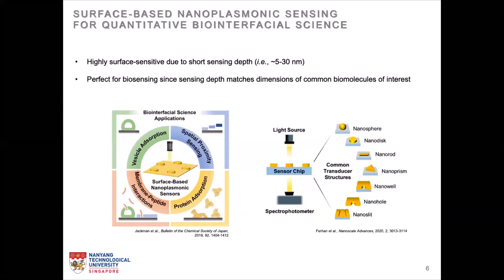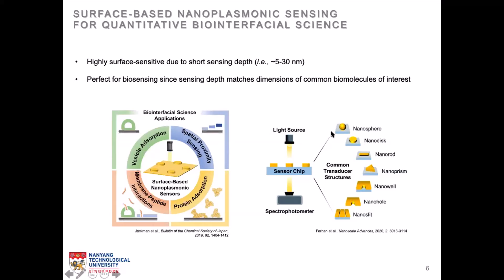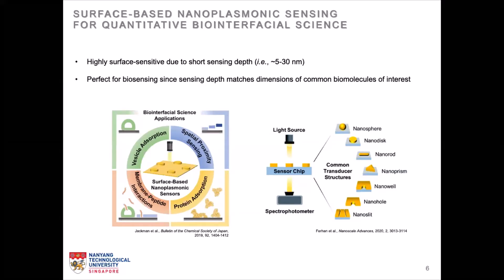Lastly, we can use nanoplasmonics to understand molecular membrane interactions. For example, we've been actively using it to study how peptides interact with lipid membranes, both in the form of intact vesicles as well as supported lipid bilayers. Our surface-based nanoplasmonic platforms currently comprise mainly gold nanoparticles, nanodiscs, nanorods, nanowells, nanoholes, and nanoribbons — though of course there are other nanostructures worth exploring. You can imagine the vast potential of this platform, and we're only at the beginning of this really exciting journey.